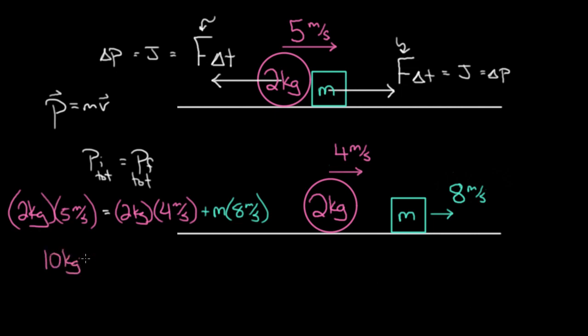So this is going to be 10 units of momentum, 10 kilogram meters per second is what the ball started with. And then the ball is going to end with eight kilogram meters per second. So we can see right here, the ball lost two units of momentum, that means the green cube better gain two units of momentum, so this is going to be plus m times eight.